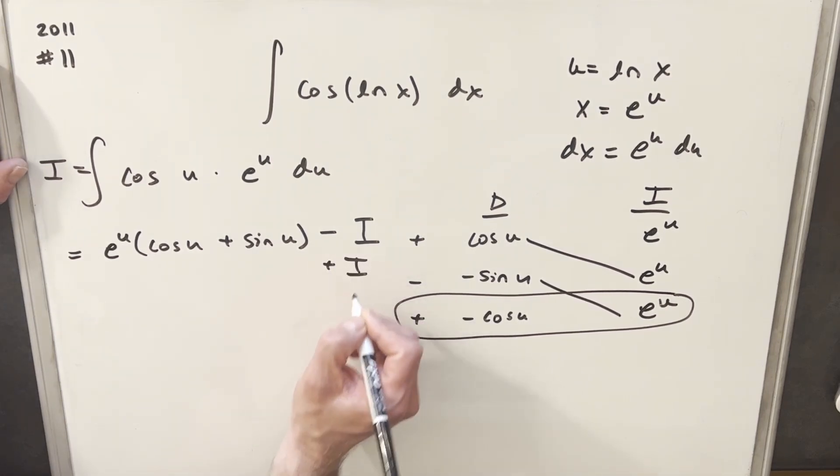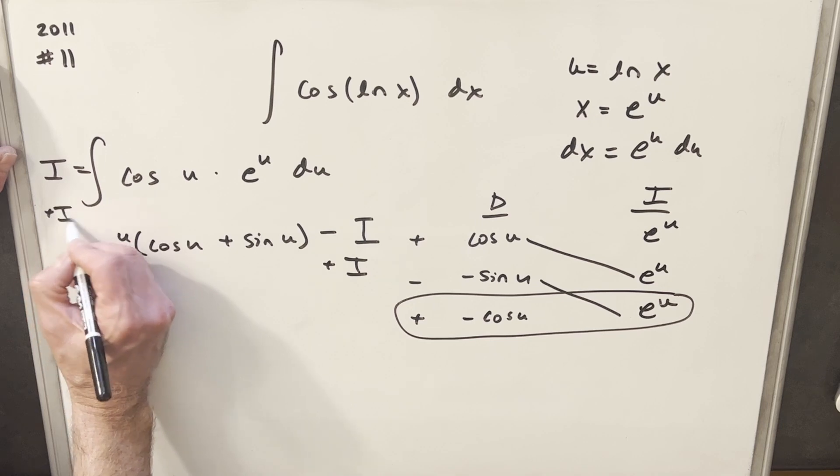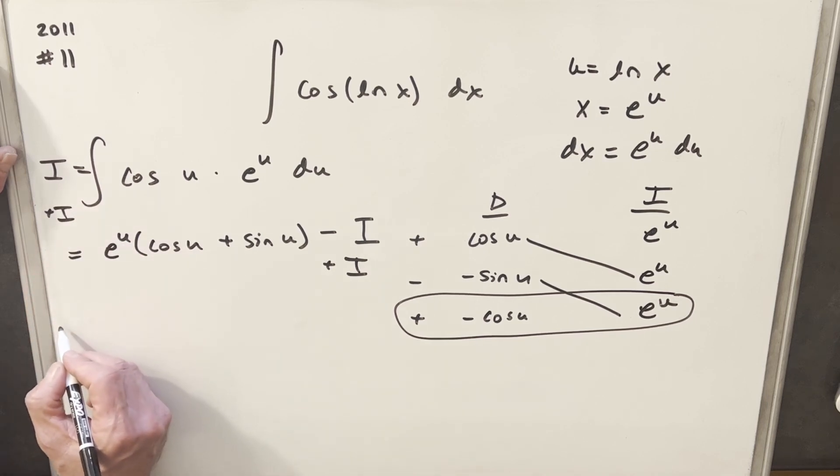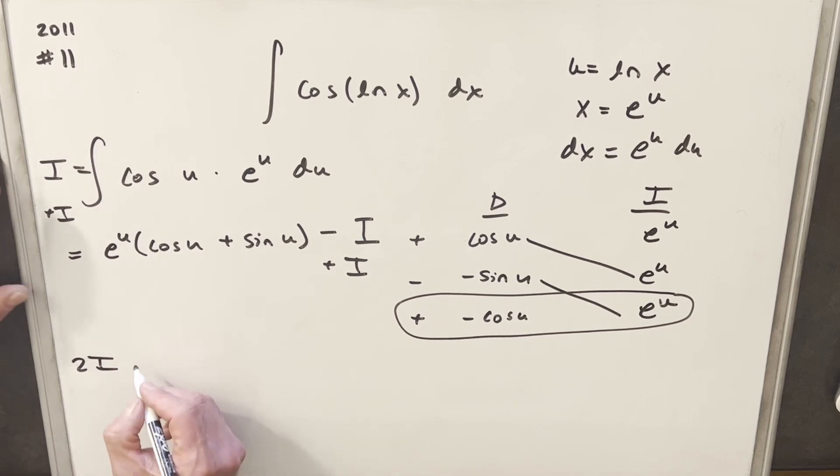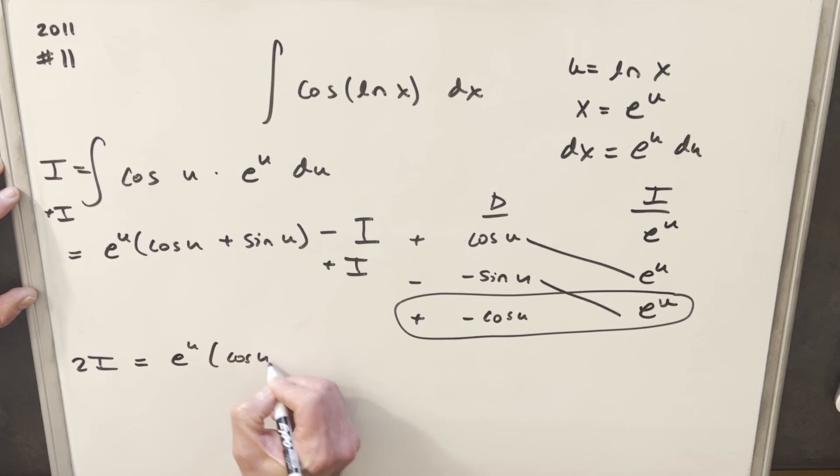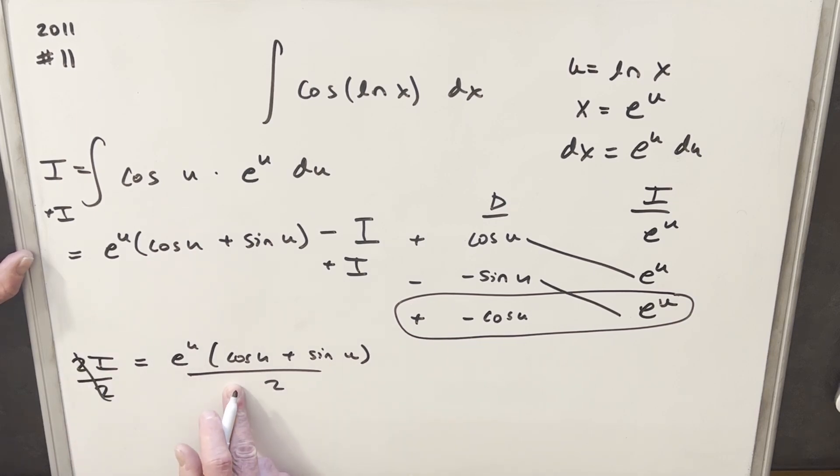So what we can do is we'll just add an i on both sides. Okay, we'll add it here and here. So what we're going to end up with is a little equation. We'll have 2i, two copies of the integral, is equal to e to the u, cosine u, sine u. But then to solve this, it's real easy. We just divide by 2. Okay, that'll cancel. Now we're close.